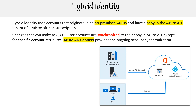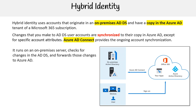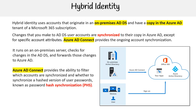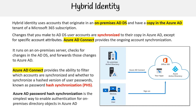Azure AD Connect provides the ongoing account synchronization. This runs on an on-premises server, checks for changes in the AD DS, and forwards those changes to Azure AD. Azure AD Connect also provides the ability to filter which accounts are synchronized and whether to synchronize a hash version of user passwords, known as password hash synchronization. Password hash synchronization is the simplest way to enable authentication for on-premises directory objects in Azure AD.